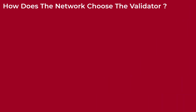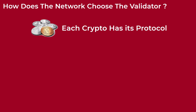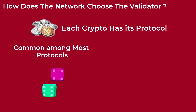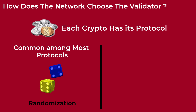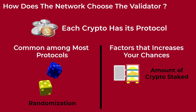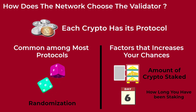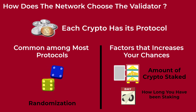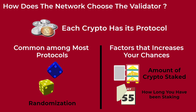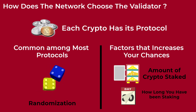Now let's move on to how the network chooses the validators. You should know that each cryptocurrency has its own protocol to choose the validators. But what is common between most of these protocols is that the validator is chosen randomly, with some other factors that can increase your chance of being chosen by the network, such as the amount of crypto staked and for how long you have been staking your crypto. The larger the amount of staked crypto, the higher your chance of getting chosen. Also, the longer you have been staking your crypto, the higher your chance of getting chosen by the network.